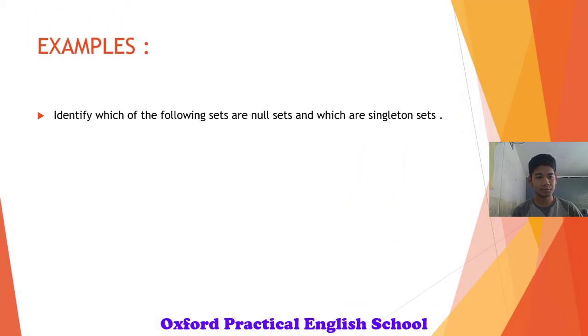The examples are, identify which of the following sets are null and which are singleton sets. Example number 1. Set A, set of natural number less than 1. The set of natural number less than 1 is nothing because natural number itself starts from 1. And hence it is a null set.